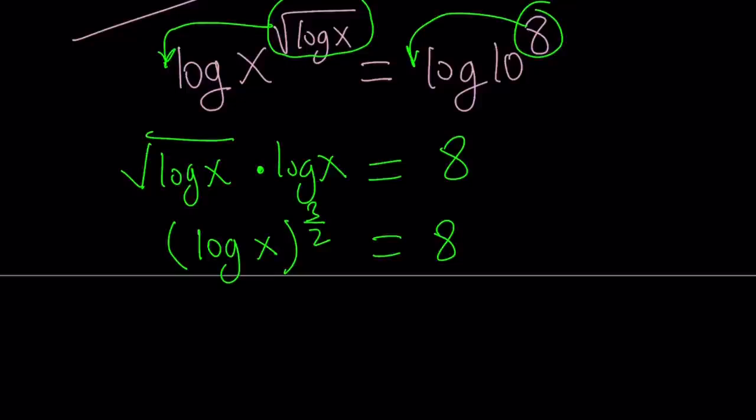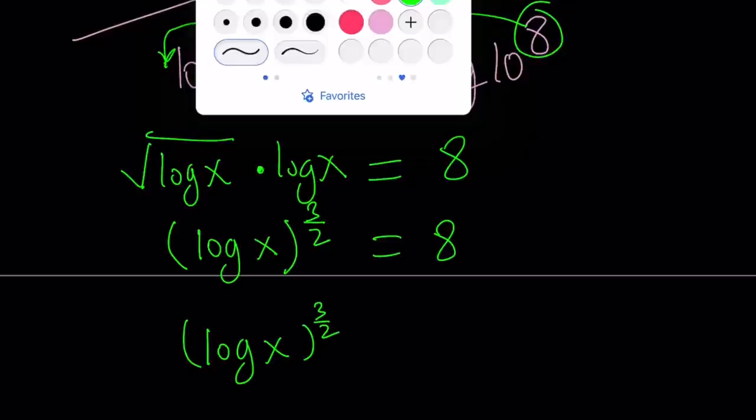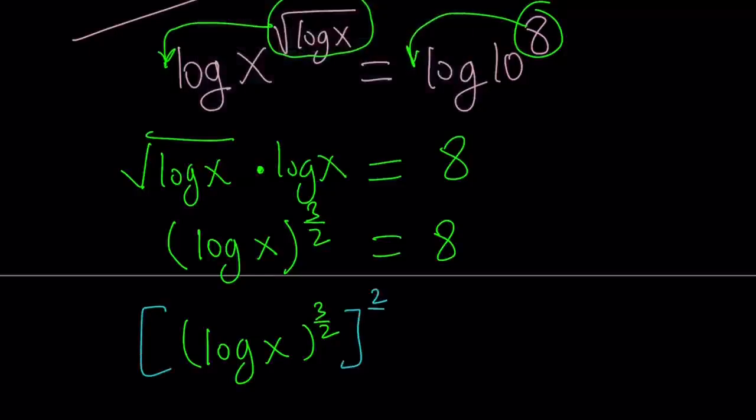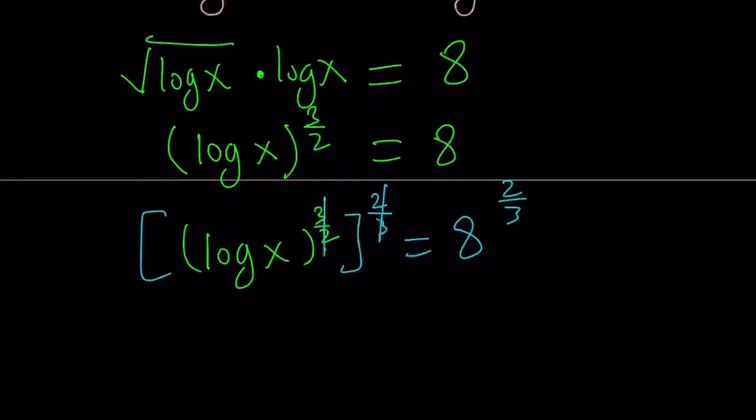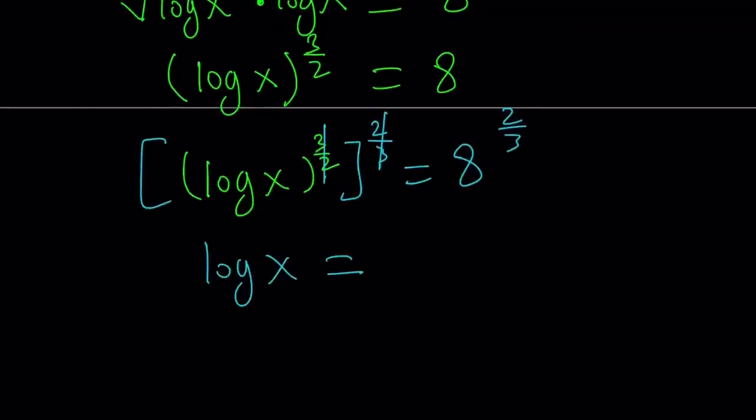We've got to remember that x needs to be positive here because we're talking about the logarithm of x, so that is going to be our domain. Let's go ahead and find x from here. First of all, we have a power on the left-hand side, so let's go ahead and get rid of that. Why don't we just go ahead and take this power and raise it to another power, which is going to be 2 thirds, and do the same thing on the right-hand side. Now, when you raise a power to another power, these two are multiplying and their product is 1. And from here, we get the following.